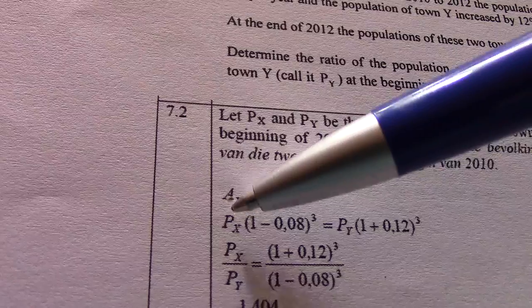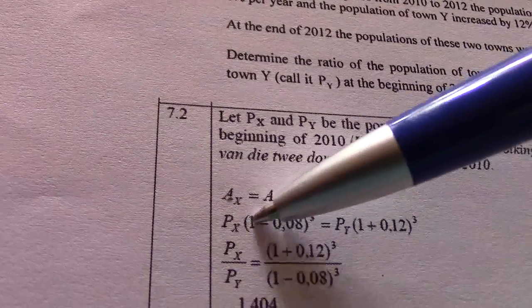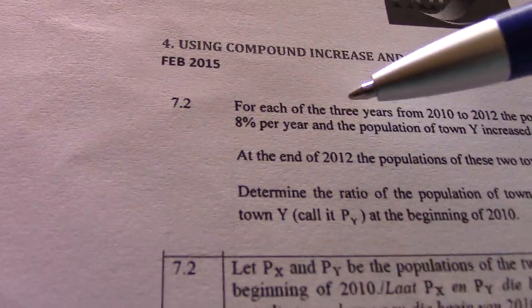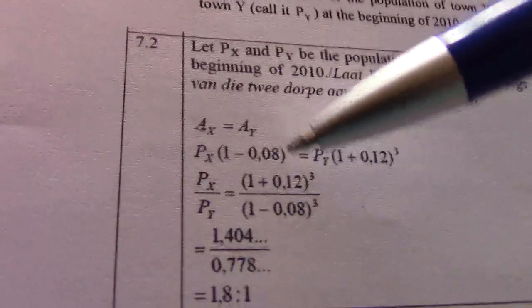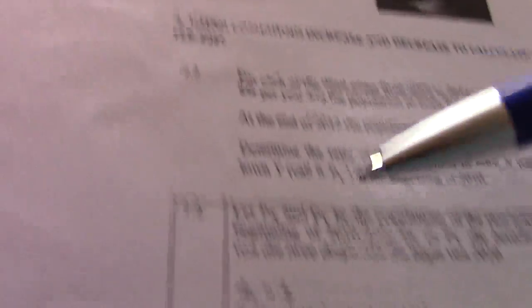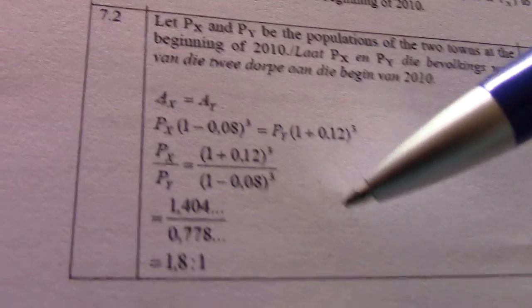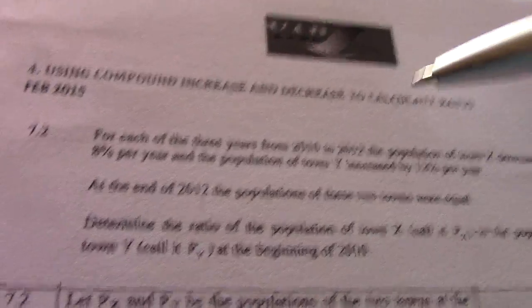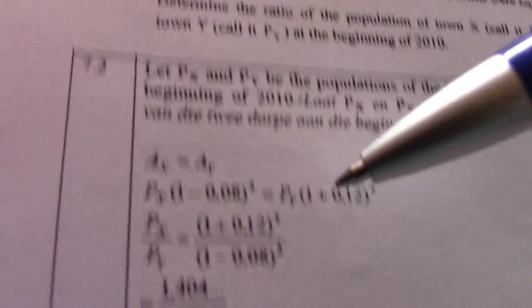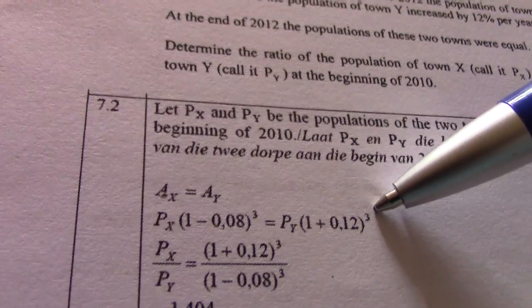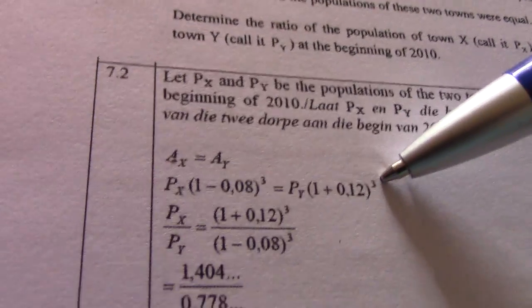So population X: the formula is PX times (1 minus 0.08) to the power of 3. It's decreasing. On the other side, it's an increase of 12% per year, increasing for three years: PY times (1 plus 0.12) to the power of 3.